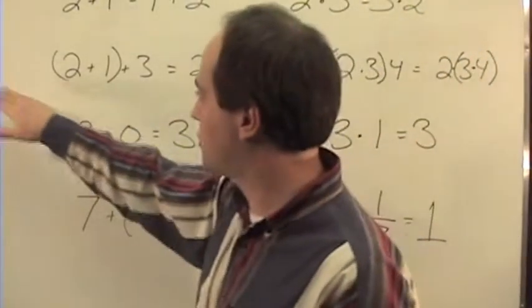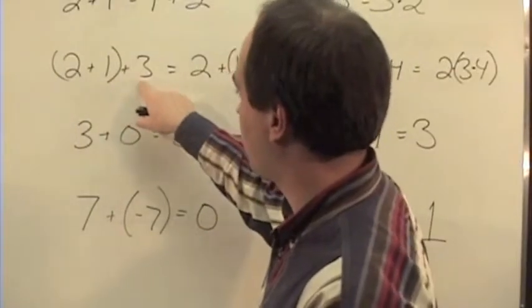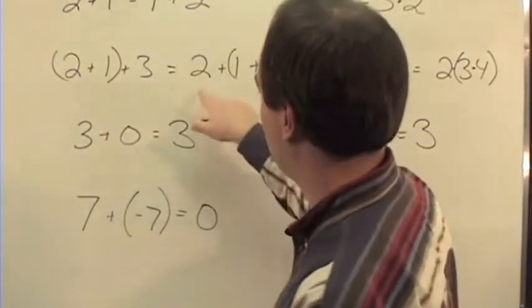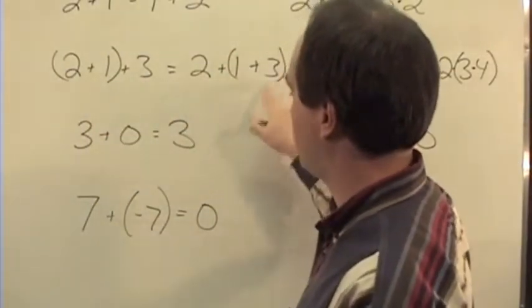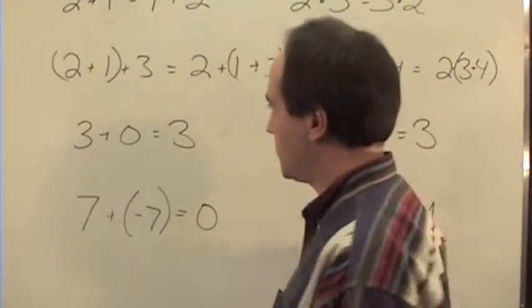If we look at the associative, which means how do we associate things together, 2 plus 1 plus 3, where I do 2 plus 1 first, is equal to 2 plus 1 plus 3, where I do the 1 plus 3 first. So it doesn't matter which order I do them in as long as they're all addition.